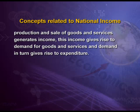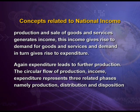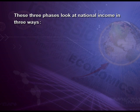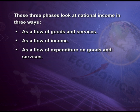As we discussed earlier, production and sale of goods and services generates income. This income gives rise to demand for goods and services, and demand in turn gives rise to expenditure. Again, expenditure leads to further production. The circular flow of production, income, and expenditure represents three related phases: namely production, distribution, and disposition. These three phases look at national income in three ways: as a flow of goods and services, as a flow of income, and as a flow of expenditure on goods and services.